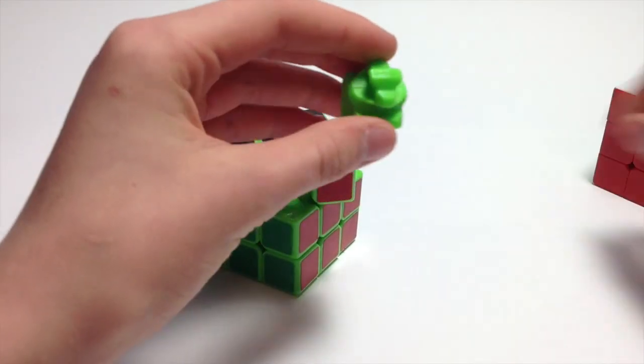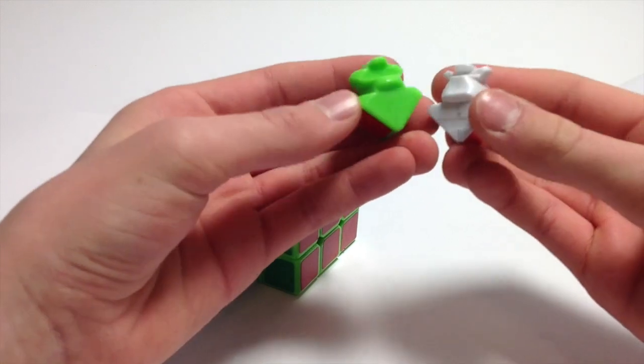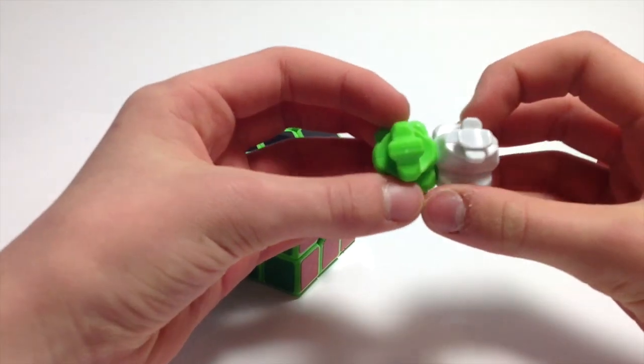When we take a look at the mechanism, we can see how it closely resembles a Weilong, which is the reason this cube does not pop.